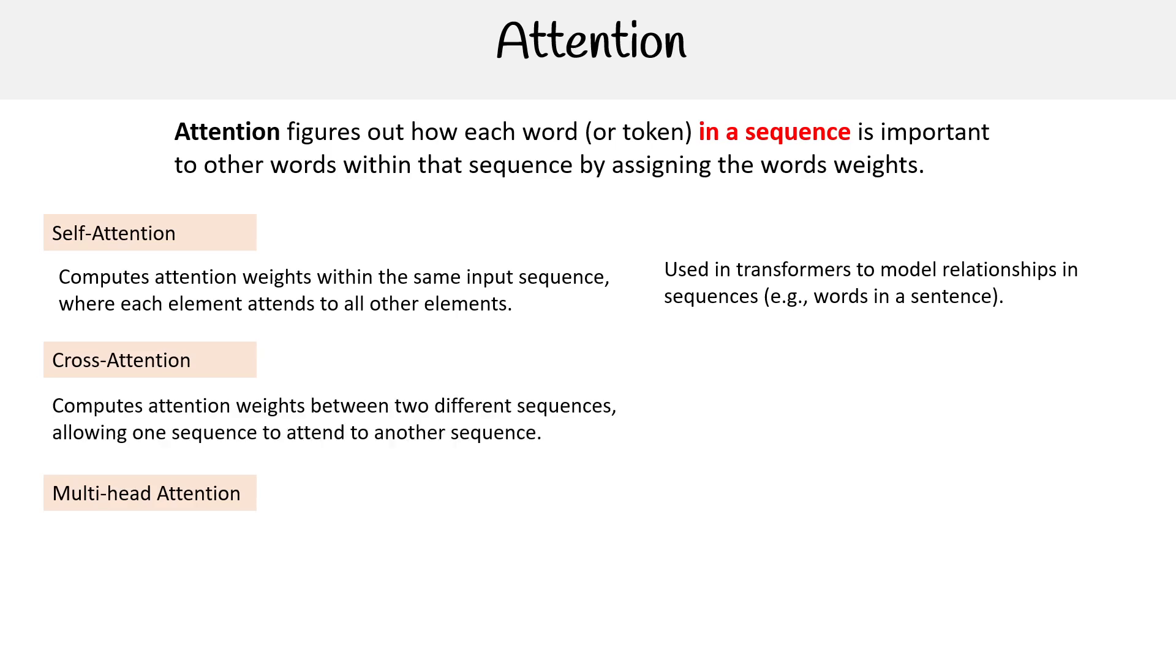You have cross-attention, which computes attention weights between two different sequences, allowing one sequence to attend to another sequence. This is used in tasks like translation where the output sequence decoder needs to focus on the input sequence encoder.